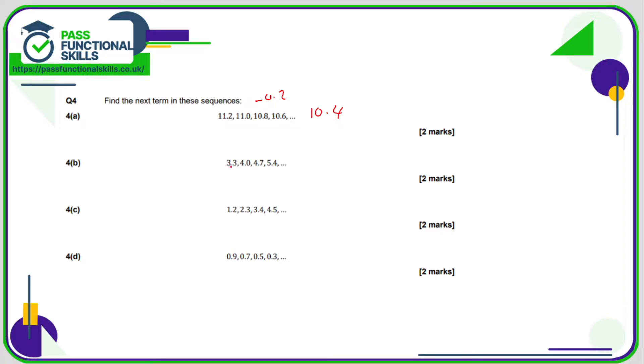3.3 to 4.0, we're adding 0.7, so if we add 0.7 to 5.4 then we're going to get 6.1.